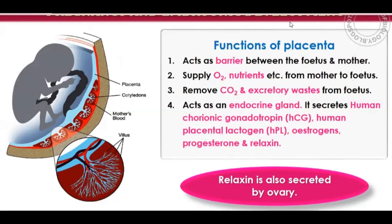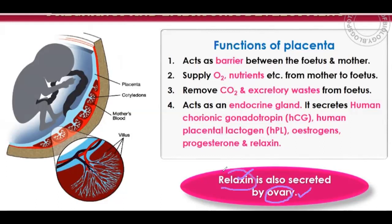HCG is a very important pregnancy hormone. Lactogen (HPL) is responsible for the production of milk in the mammary gland and is secreted during pregnancy for milk production. Relaxin is also secreted by the ovary.